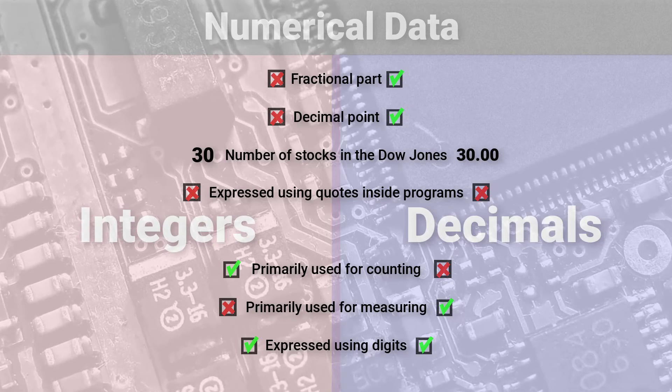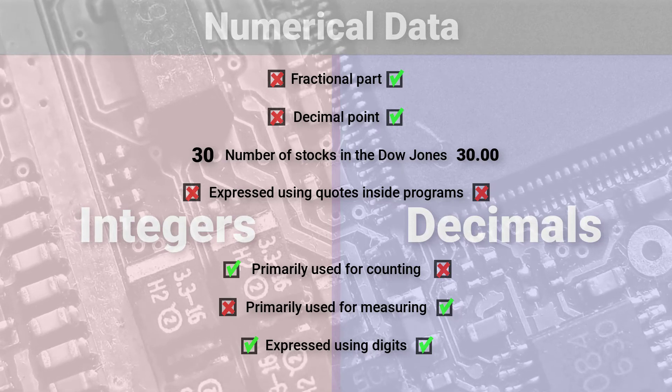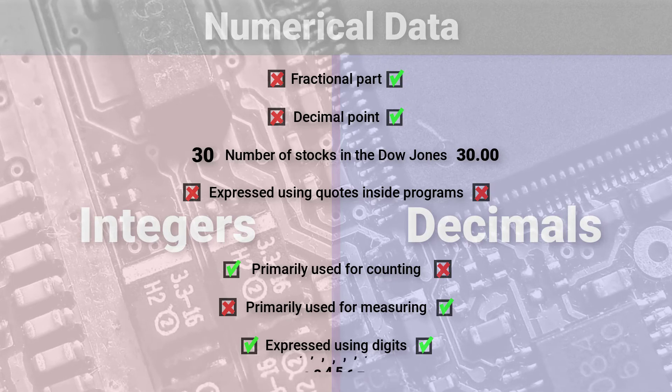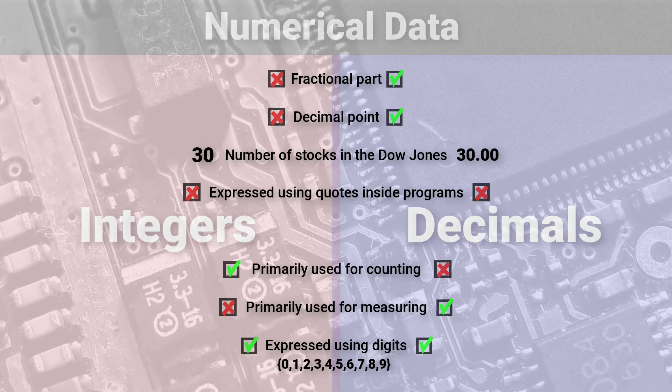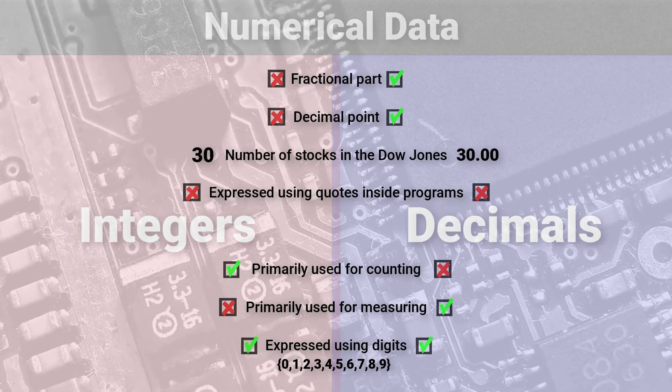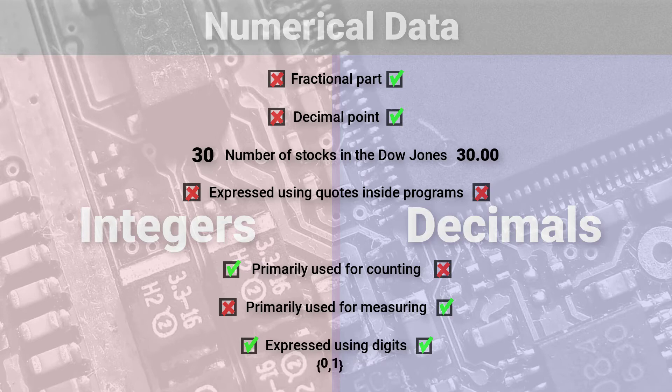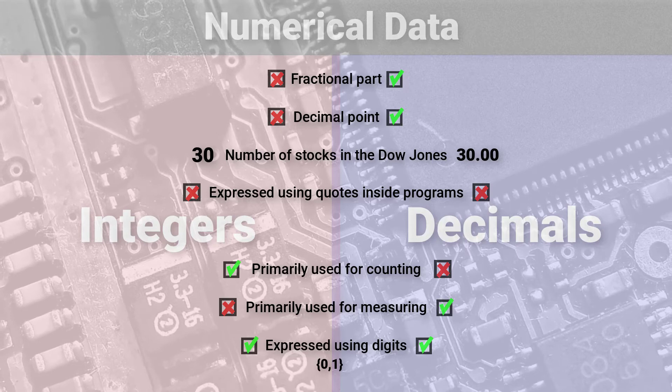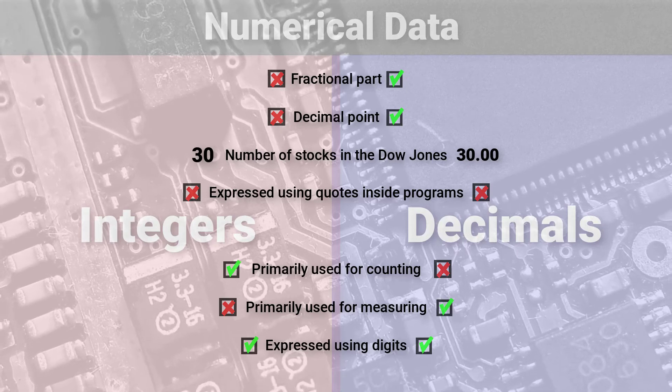Computers express numbers using the binary number system. And humans express numbers using the decimal number system. There are 10 digits in the decimal number system. And each digit in a number from this system represents a power of 10. In the binary number system, there are two digits. And each digit in a number from the binary system represents a power of 2.